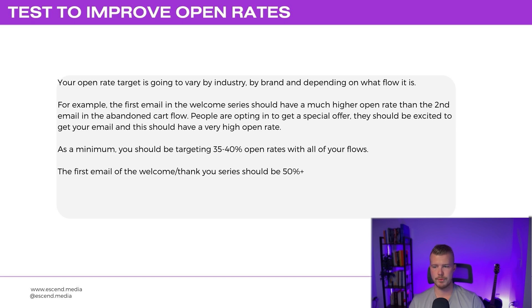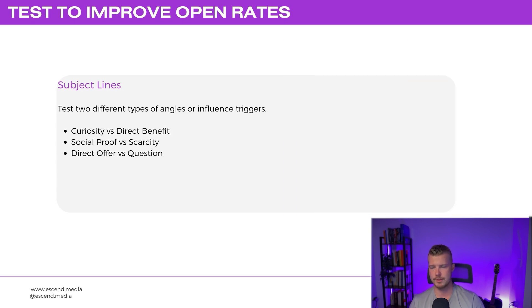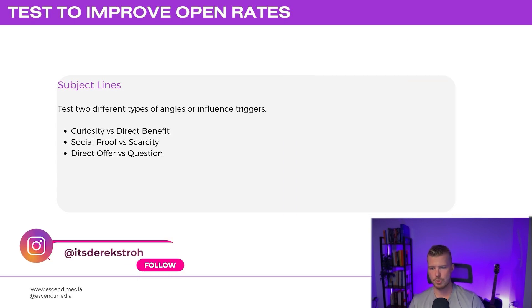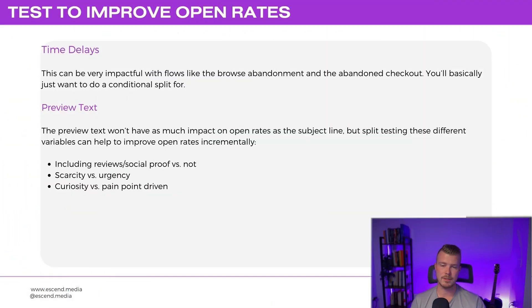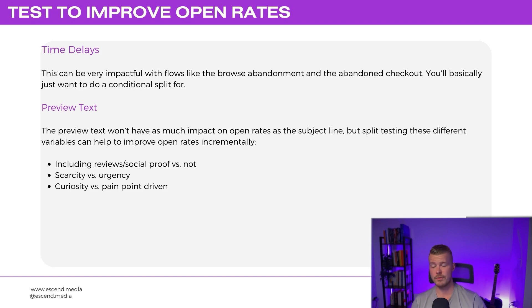To improve open rates, subject lines are a big one — test two different types of angles or influence triggers: curiosity versus direct benefit, social proof versus scarcity, direct offer versus a question. Time delays can also be super impactful with flows like browse abandonment and abandoned checkout — test 30 minutes versus 1 hour versus 2 hours versus 4 hours. Preview text won't have quite as much impact as the subject line, but split testing it — scarcity versus urgency, curiosity versus pain points — can incrementally improve open rates.